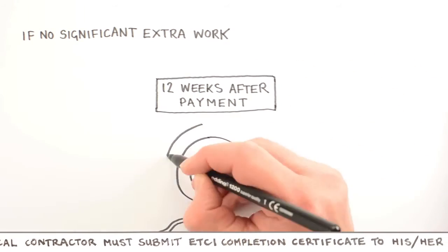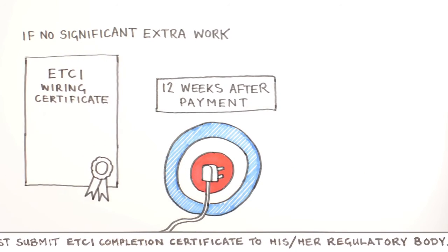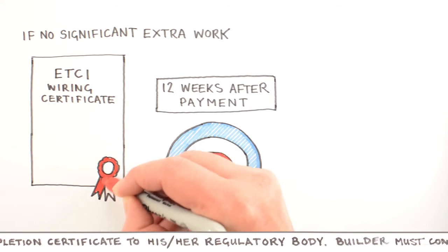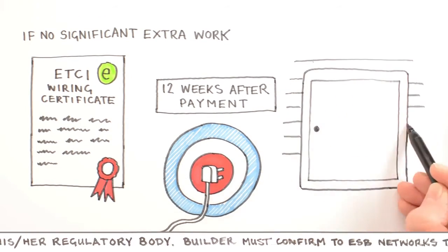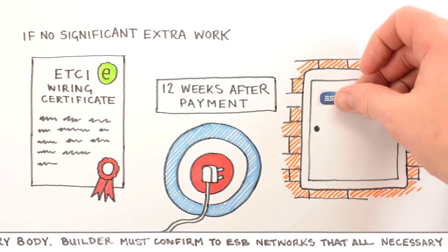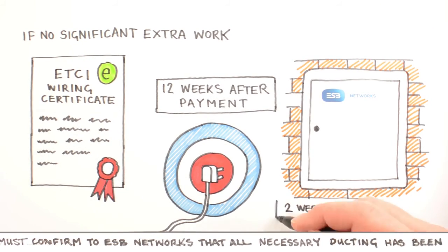To help us meet this target, you must ensure we have received both an electronic notification of your ETCI wiring certificate from your contractor's regulatory body and confirmation that the outdoor meter cabinet and ducting has been provided as per our ESB Networks specification at least two weeks before you require connection.